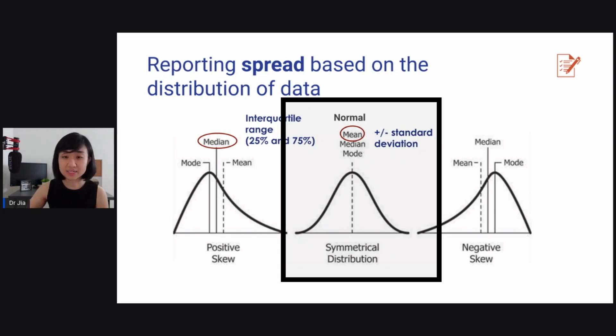How you report your averages and spread is based on the distribution of data. We're here, right in the middle. If it's symmetrical, you report the mean and the plus minus standard deviation, because as you can see, both right and left will be equal. Now if it is non-normal, not a symmetrical distribution, the one on the left here, you want to report on the median and the interquartile range, specifically the 25th and 75th quartile range.